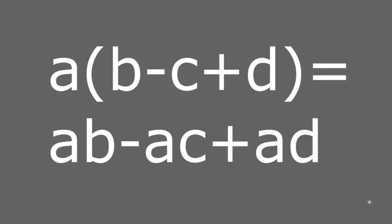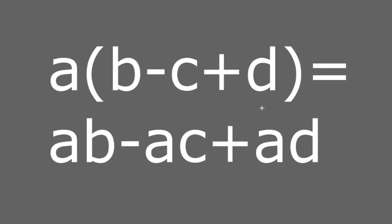The distributive property can be applied to more than two terms inside the parenthesis. For example, if I have a multiplied by b minus c plus d, I just distribute the a among each one of the terms. A times b is positive because b is positive; I have minus a times c because c is negative; and plus a times d because d is positive. If d were negative, it would be minus a times d. The sign of addition or subtraction depends on whether each term is positive or negative.